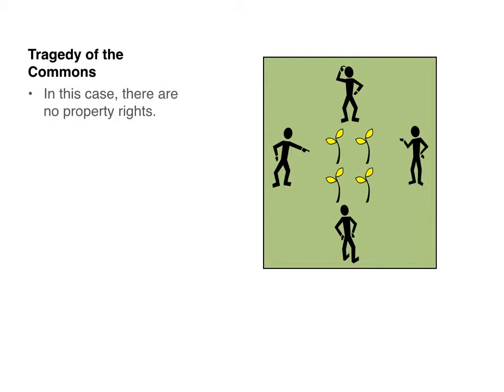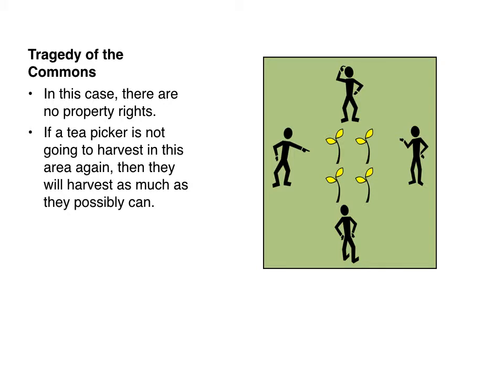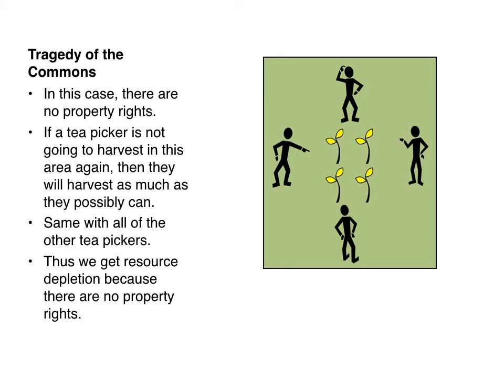Now we have the tragedy of the commons. In this case, we have the example of tea farmers on a commonly owned tea plantation. If a tea picker is not going to harvest in this area again, the incentive is to harvest as much as they possibly can. That is the same with all the other tea pickers, and thus we get resource depletion because there are no property rights — that is the issue of the tragedy of the commons.